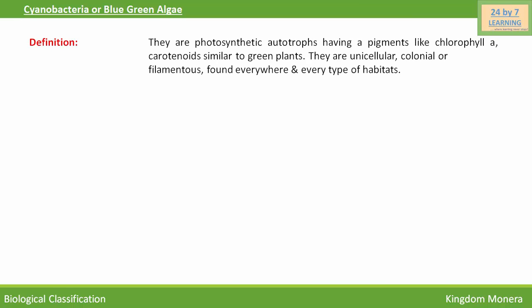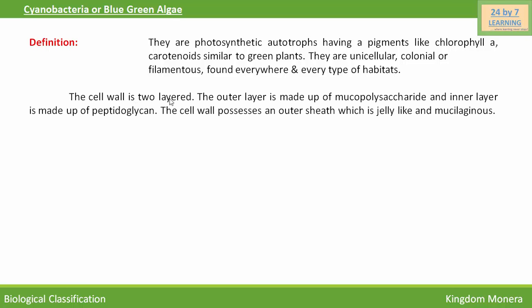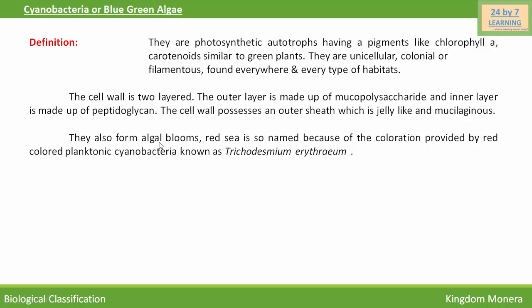Cyanobacteria, also called blue-green algae, are photosynthetic autotrophs having pigments like chlorophyll A and carotenoids, which are similar to green plants. They are unicellular, colonial, or filamentous, found everywhere and in every type of habitat. The cell wall is two-layered: the outer layer is made up of mucopolysaccharide and the inner layer is made up of peptidoglycan. The cell wall possesses an outer sheath which is jelly-like and mucilaginous. They also form algal blooms.